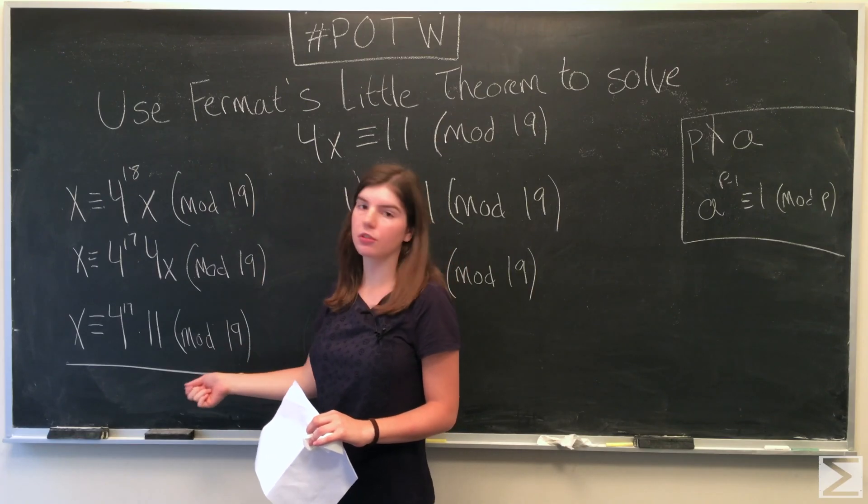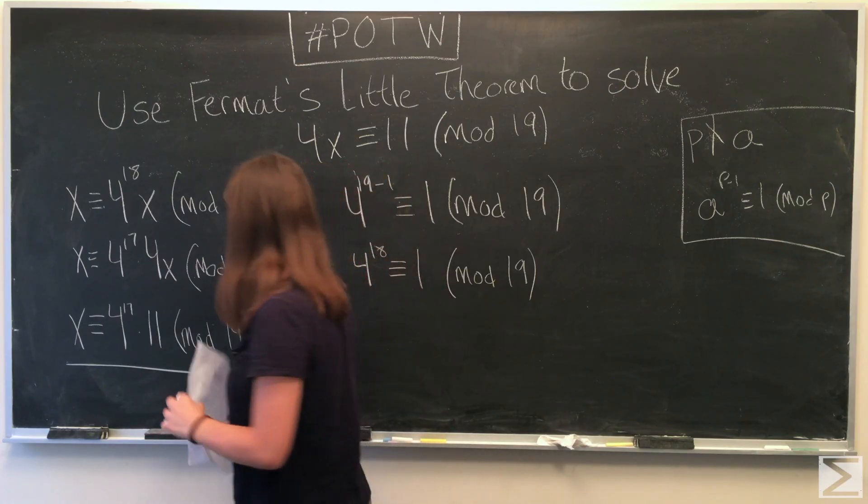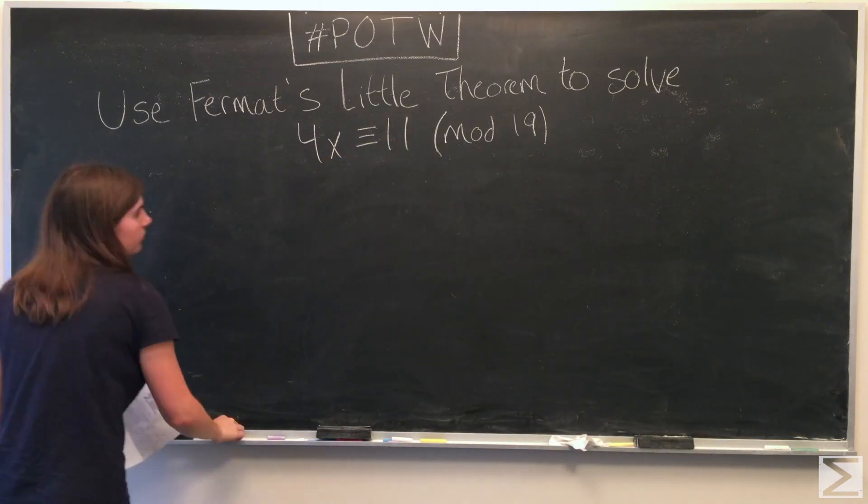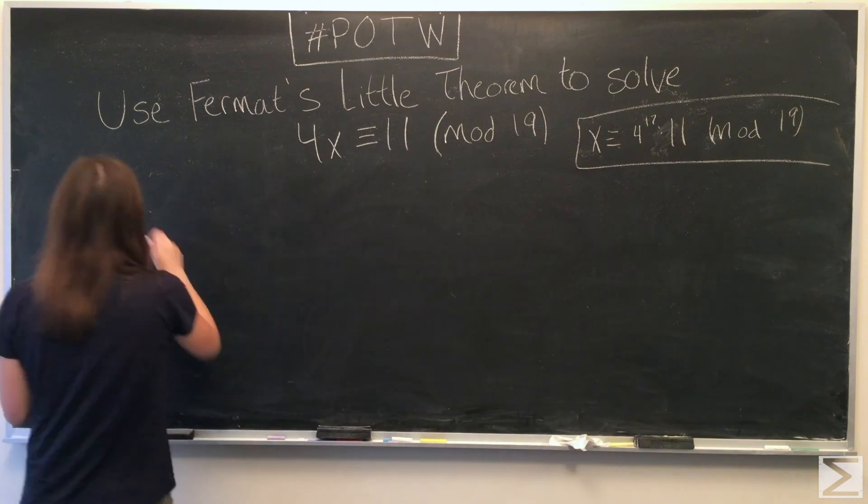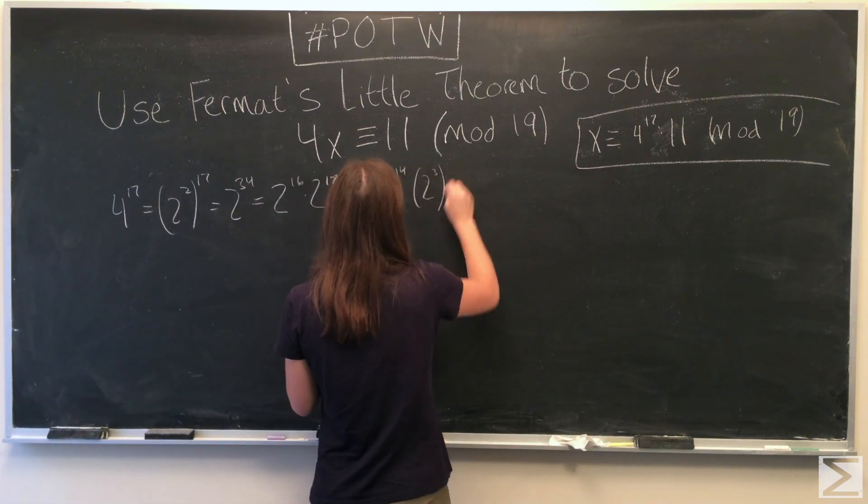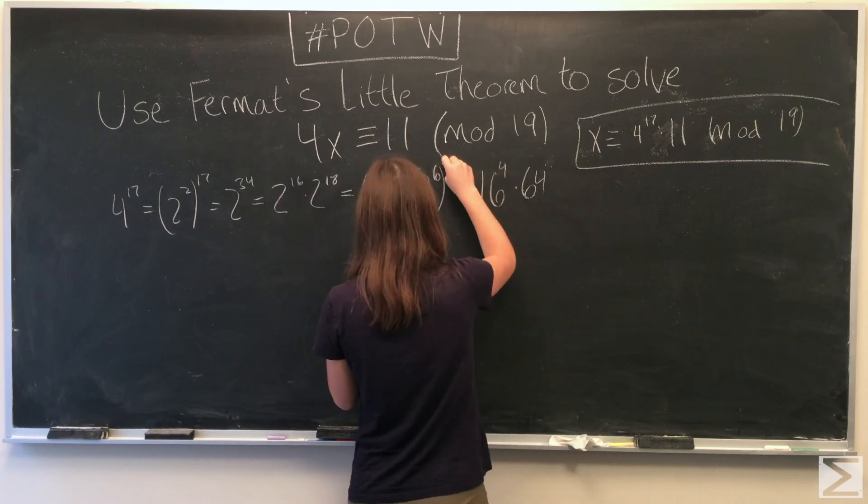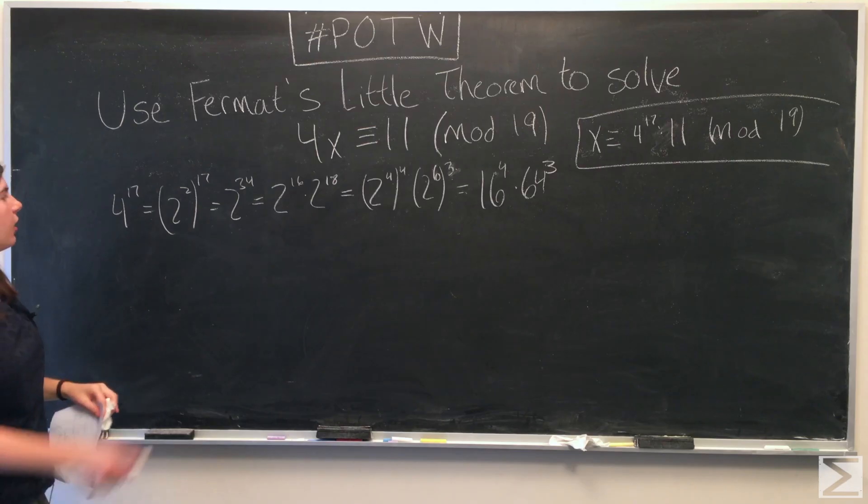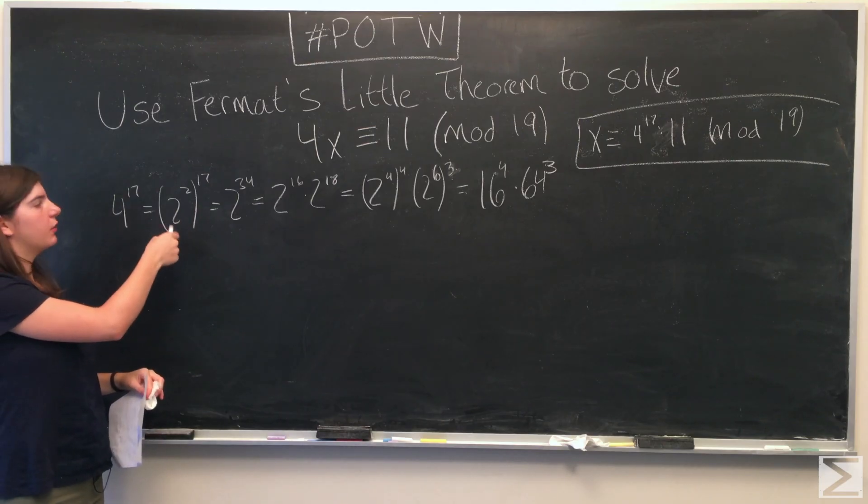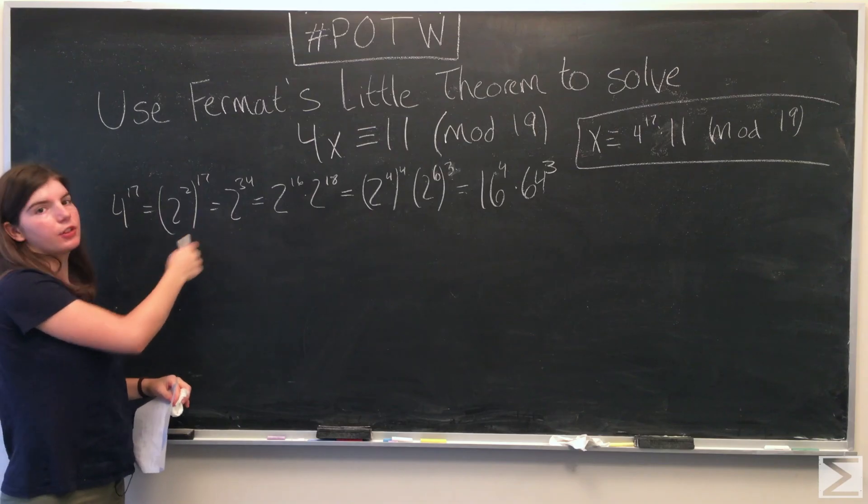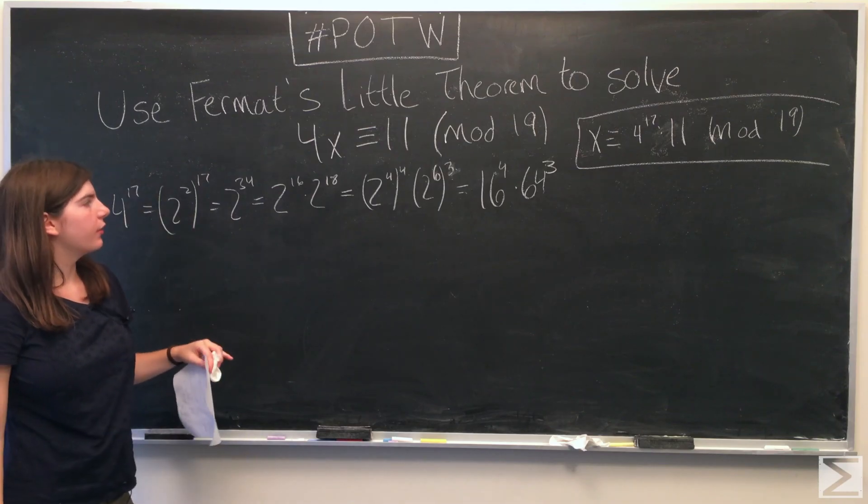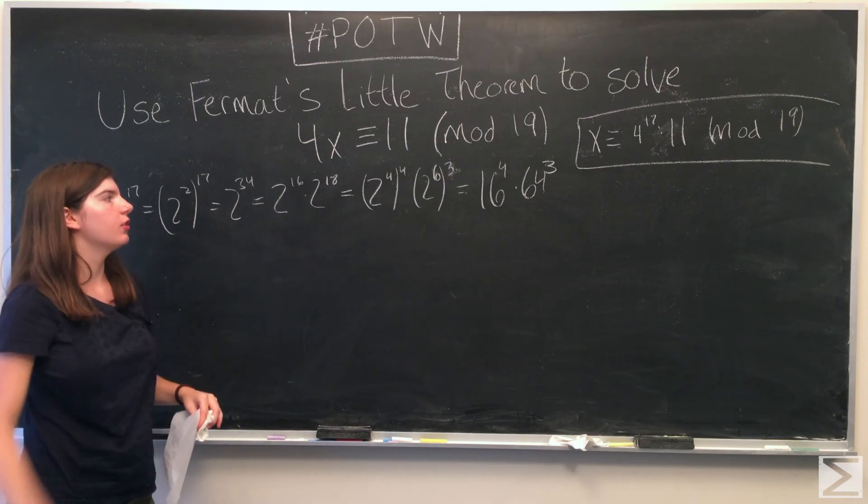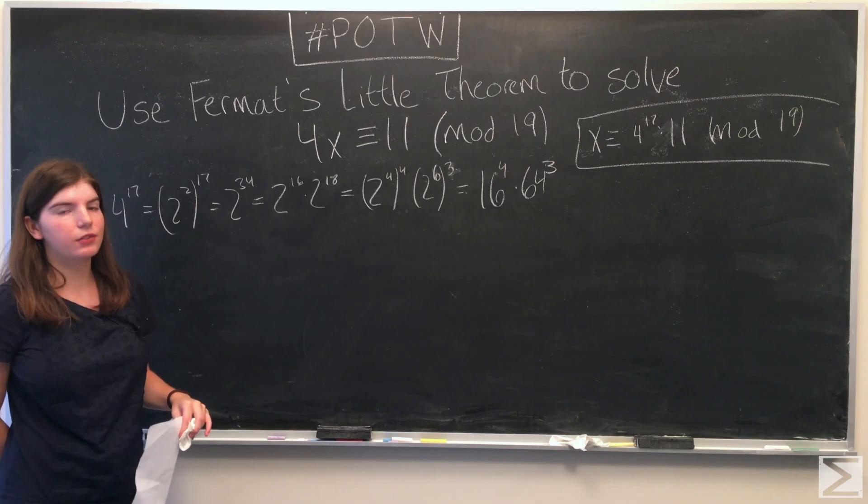Now we just have to reduce this and simplify. We're rewriting 4 to the 17th. We can rewrite 4 as 2 to the 2nd, so we have 2 to the 2nd to the 17th. This reduces to 2 to the 34th. 34 is equal to 16 plus 18, so we can use the product rule of exponents to write this as 2 to the 16th times 2 to the 18th.